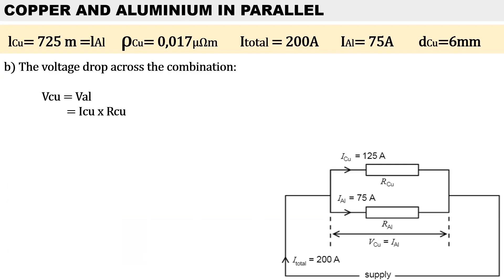To determine the voltage drop across this combination: because it's a parallel combination, voltage remains the same. Therefore, the voltage across the copper and aluminum conductors should be equal. We have all the values for copper, so we use copper as our reference. The current through copper is 125 amps and the resistance of copper is 0.436 ohms. Therefore, the volt drop across the parallel branch is 54.5 volts.